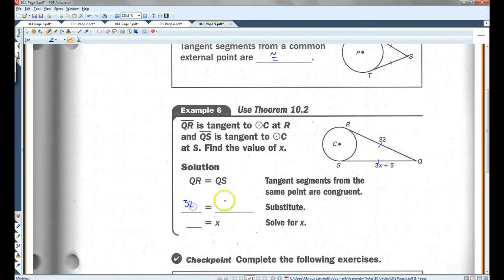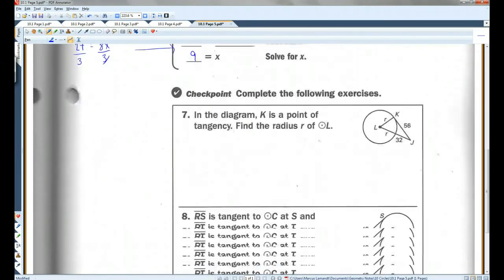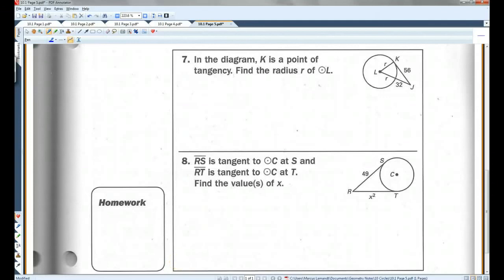So 32 equals 3X plus 5. They didn't give us a step in here. If I subtract 5 from each side, I'm going to get 27 equals 3X, and I can divide by 3. 27 divided by 3 is 9. I'll let you guys do the checkpoint, and that's all.